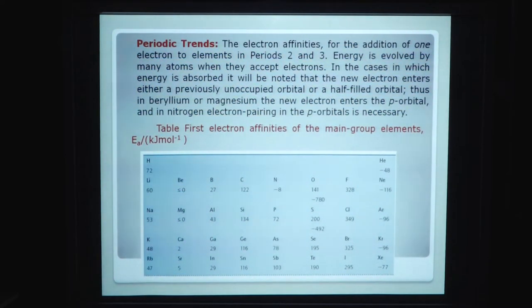Periodic trends. The electron affinity for the addition of one electron to elements in periods 2 and 3, energy is evolved by many atoms when they accept electron. In the case in which energy is absorbed, it will be noted that the new electron enters either a previously unoccupied orbital or half-filled orbital. Thus, for beryllium and magnesium, the new electron enters the p orbital and in nitrogen electron pairing in the p orbitals is necessary.